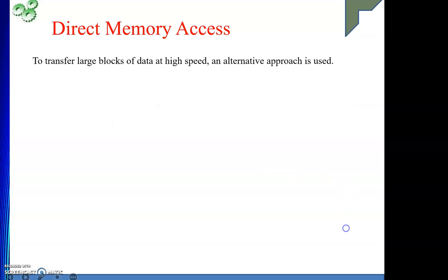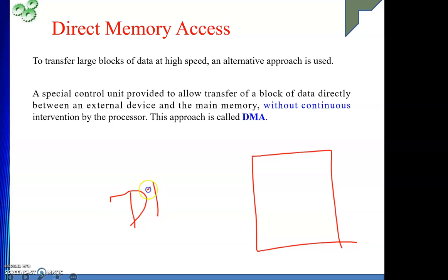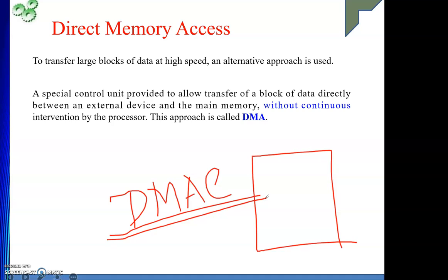Whenever a peripheral is present, it has an I/O interface, and as part of that I/O interface, the DMA controller is present. The job of the DMA controller is to perform data communication between the peripheral and memory. To do this communication it must place the address and assert the read or write signal, but first it must take permission from the CPU to get control of the system bus.